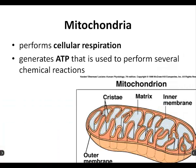Mitochondria — kind of a cool one. It's this kidney-bean-looking thing with squiggly folds on the inside. It performs cellular respiration, where the cell takes oxygen and glucose and burns them together, generating ATP, which is used to perform several chemical reactions. Remember, ATP is what the cells use for energy — it's like cash money. It's found in eukaryotic cells. Don't forget to get mitochondria somewhere on your bingo board.